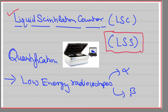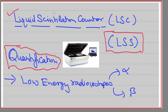The liquid scintillation counter is widely used for quantification of radioactivity in any sample. If your sample has a low amount of radioactivity or is emitting very low amounts of radiation, even those signals can be quantified. Your sample may have alpha radiation or beta radiation, and even weak signals of these can be easily quantified.